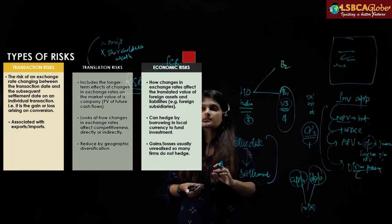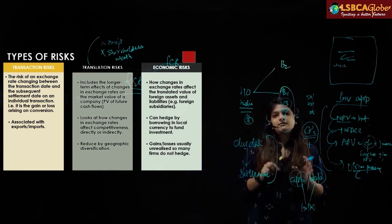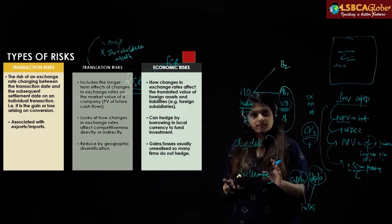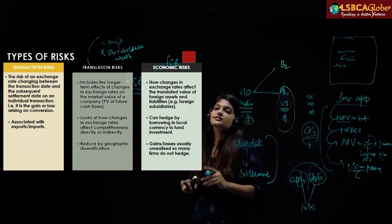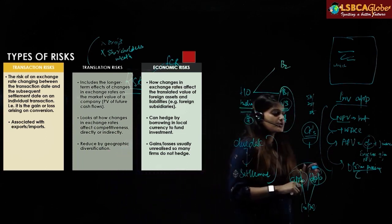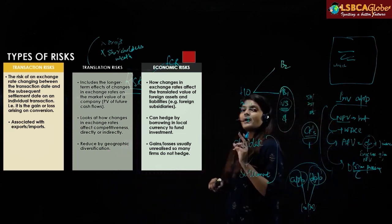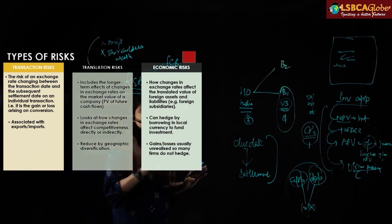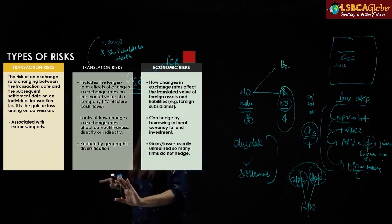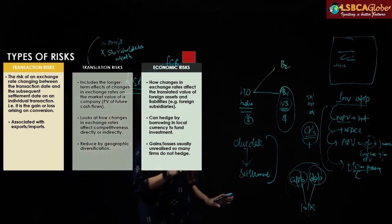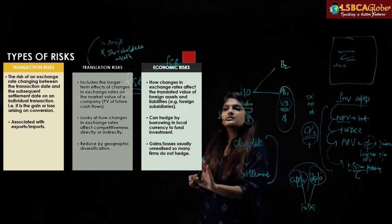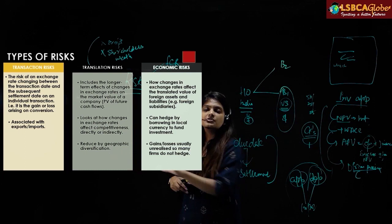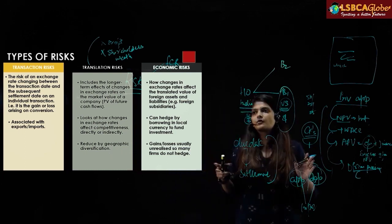Economic risk can be hedged using local fund investment. Whatever gains or losses arise can be hedged using diversification. So there are three types of risk: transaction risk needs to be hedged using various hedging instruments; translation risk can be reduced by way of diversification; and economic risk is a larger, broader impact — it is essentially a broader perspective of translation risk.